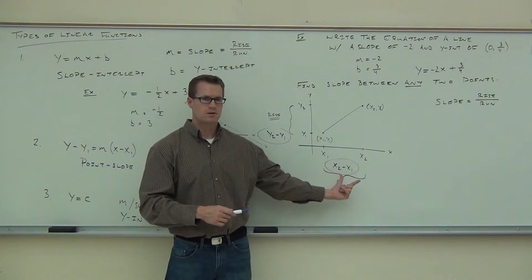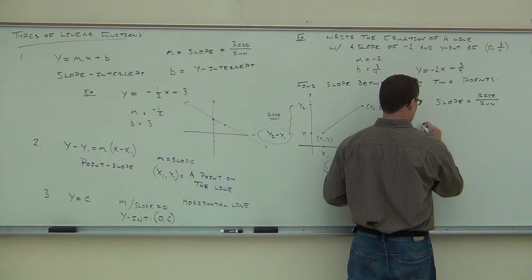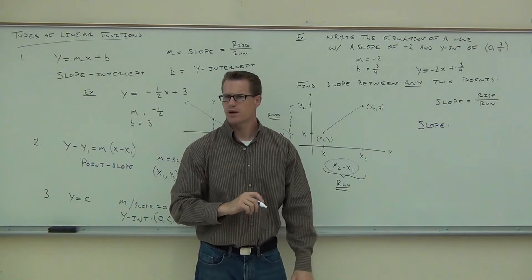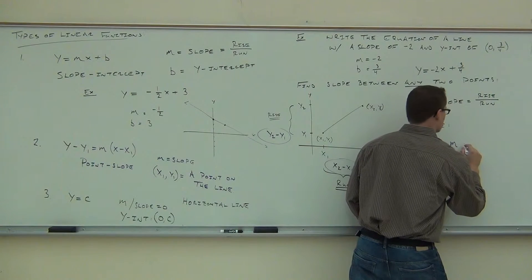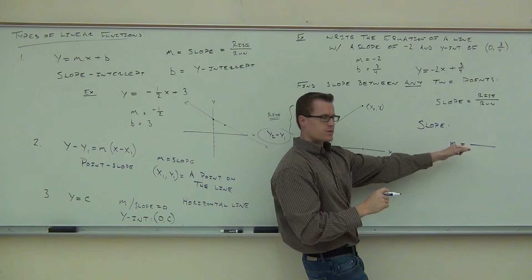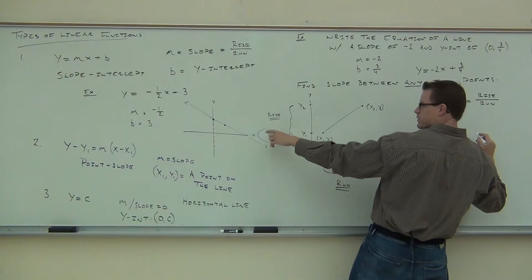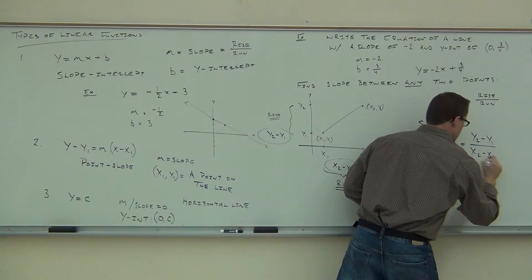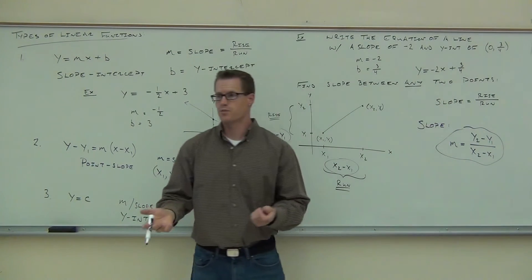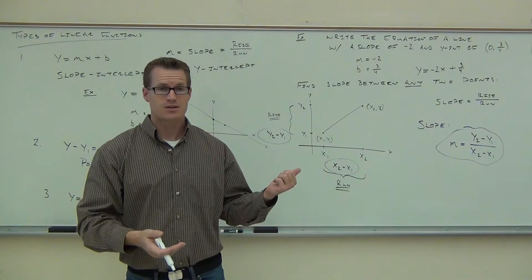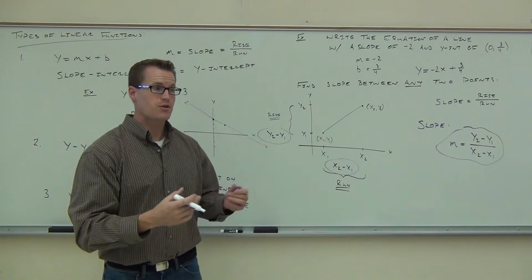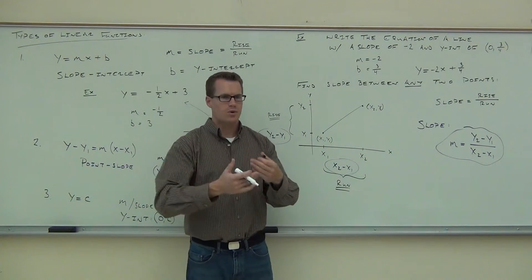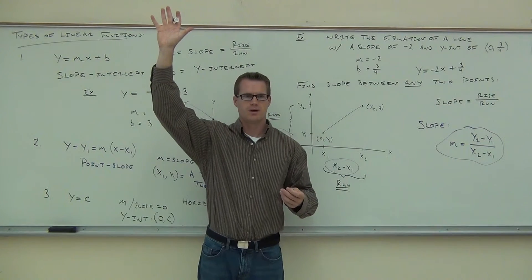Since slope is rise over run, and we have expressions for both, let's substitute. The letter we use for slope is m. So m equals rise over run. The rise is y2 minus y1, and the run is x2 minus x1. And just like that, we've invented the slope formula: m = (y2 - y1) / (x2 - x1). You may have seen it before, but this is how it's derived.